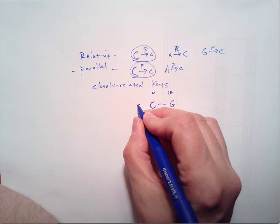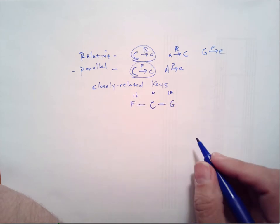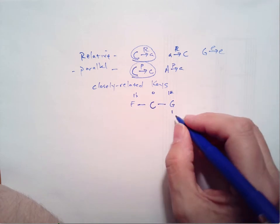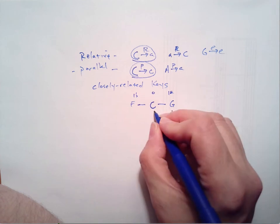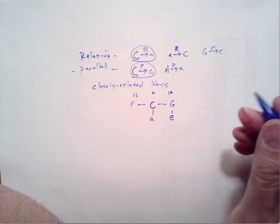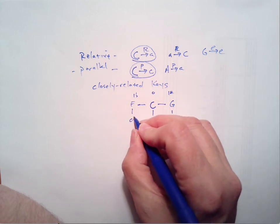And if we go to one flat, we've got F major. And of course, for each of these, we also have their relative minors. E minor also has one sharp. A minor has zero. F major has a relative of D minor.